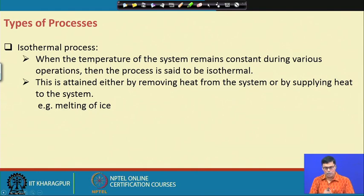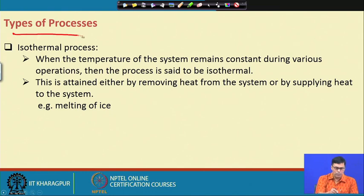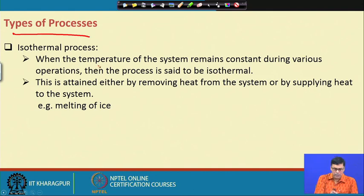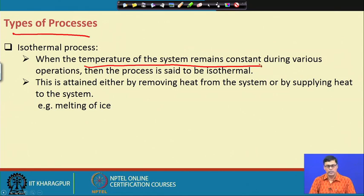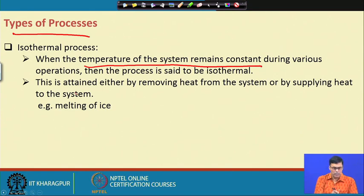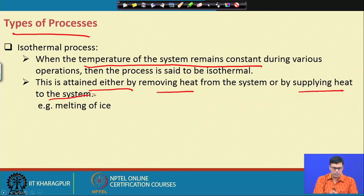We have two types of processes: isothermal and adiabatic. In an isothermal process, the temperature of the system remains constant. In an adiabatic process, there is no heat transfer. In an isothermal process, constant temperature is maintained either by removing heat or supplying heat to the system — for example, the melting of ice.